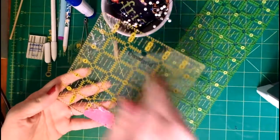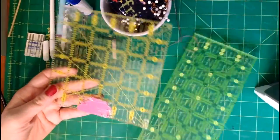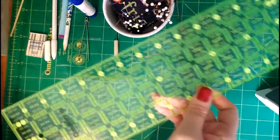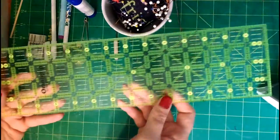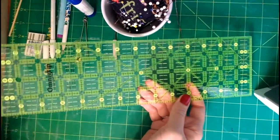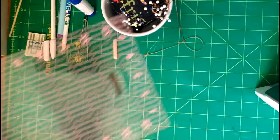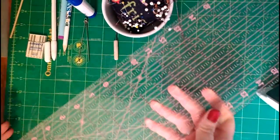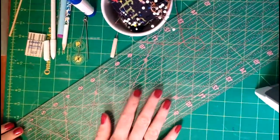First we're going to look at rulers. I use these Omnigrid ones. I have three sizes: 6 by 6, 4 by 14, and 6 by 24. Having multiple sizes really helps with different projects and with them being clear you can be sure that your fabric is super straight.